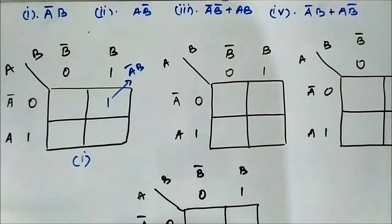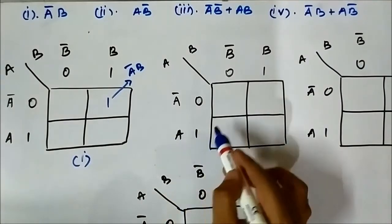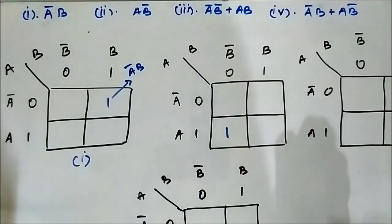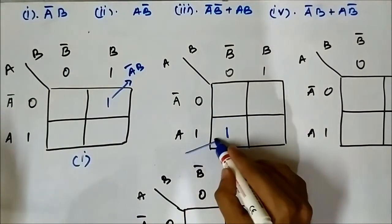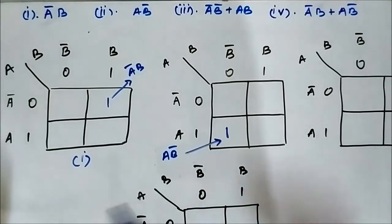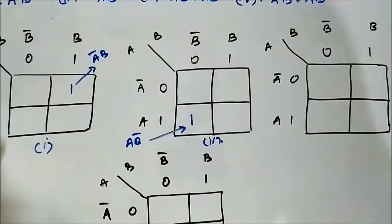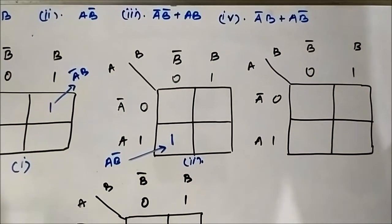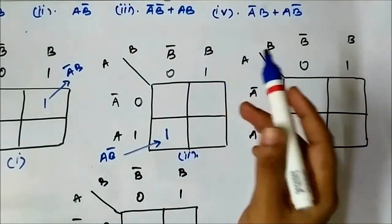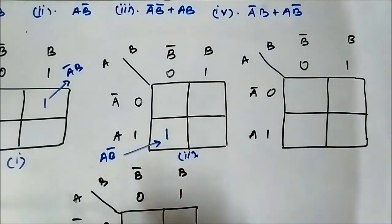The second expression is AB bar. A is the horizontal component and B bar is the vertical component, so we mark that cell as 1. This boolean expression also has a single boolean term, so only one cell is marked. Plus here means OR, and multiplication or dot means AND.